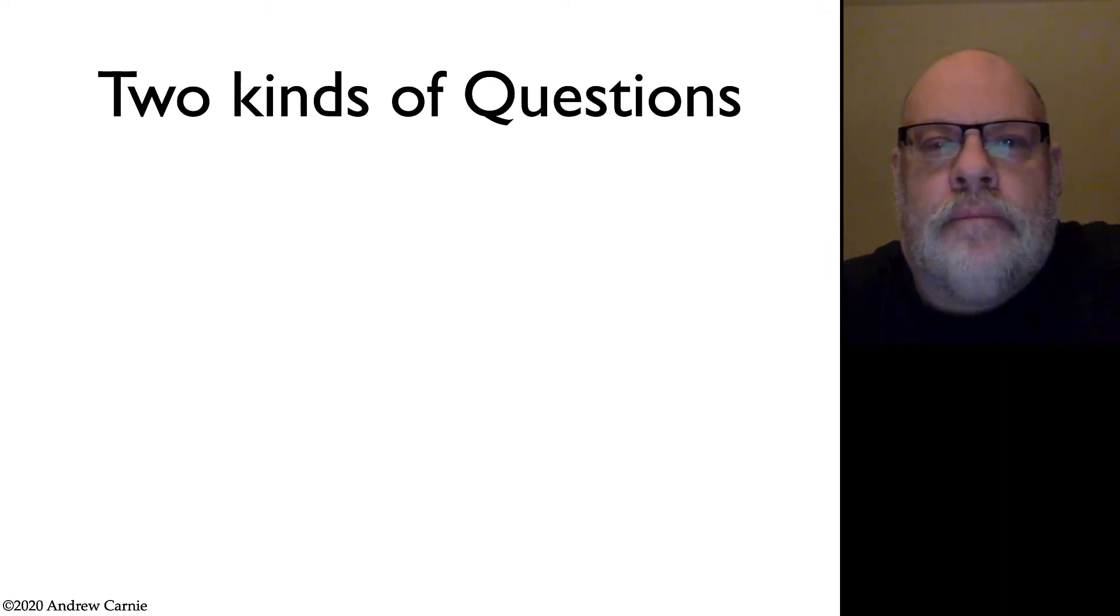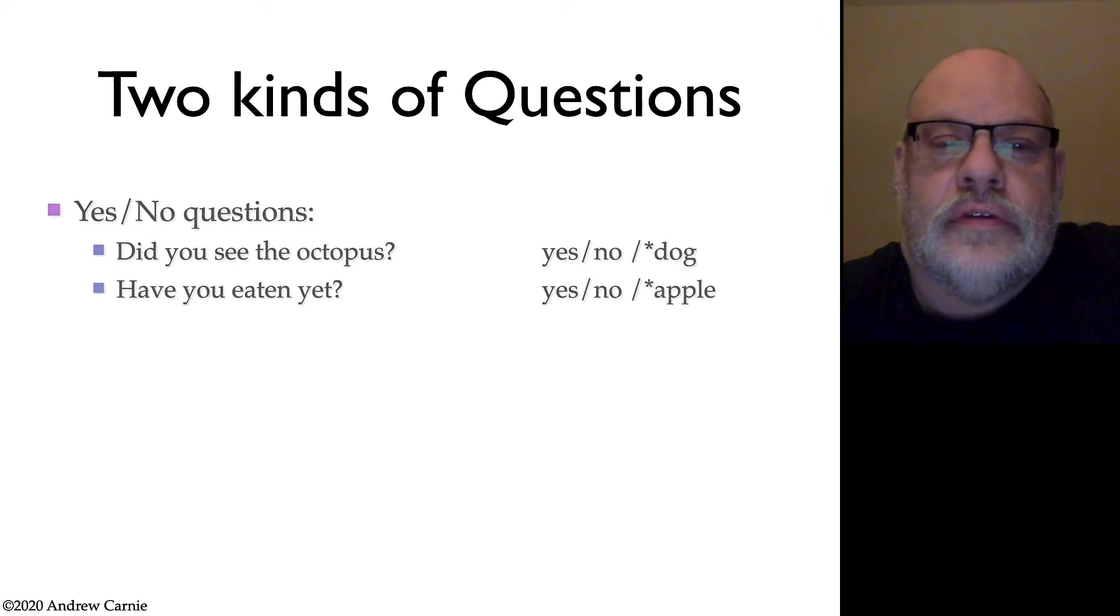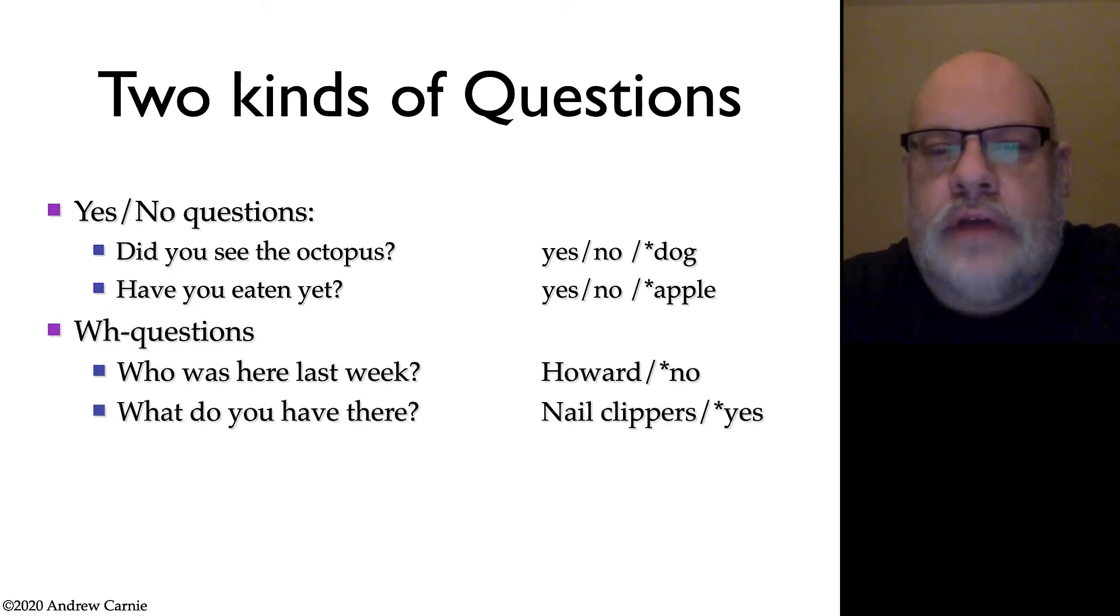WH movement plays out in a particular kind of question, although it also shows up in other constructions. In previous videos, we've talked about yes-no questions. Yes-no questions are questions that can be answered by yes, no, or maybe. So, did you see the octopus? Yes or no, but you can't answer with a content word like dog. Have you eaten yet? Yes, no, maybe, but not apple. WH questions, by contrast, are often called content questions because they are typically answered with a word that is contentful rather than yes-no.